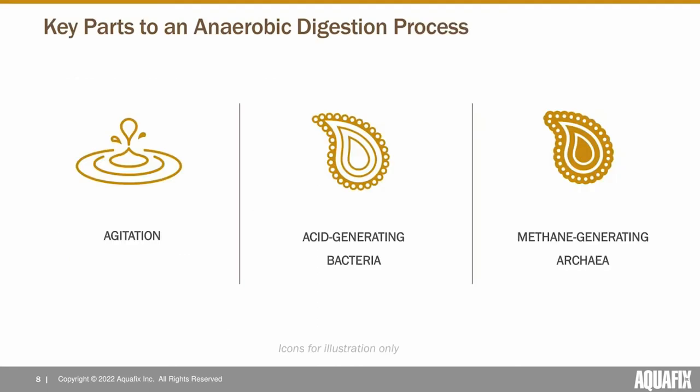For disintegration to take place — a pretty big rate limiter in many anaerobic digesters, particularly lagoons — you need agitation and water movement. Otherwise, large solid chunks won't break into smaller ones. After that, you need a healthy acid-generating bacterial population to produce exoenzymes, break down long-chain fatty acids into short-chain fatty acids, and make them available for methanogens to produce methane.